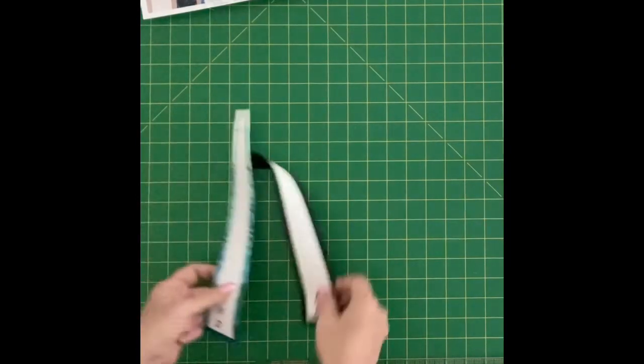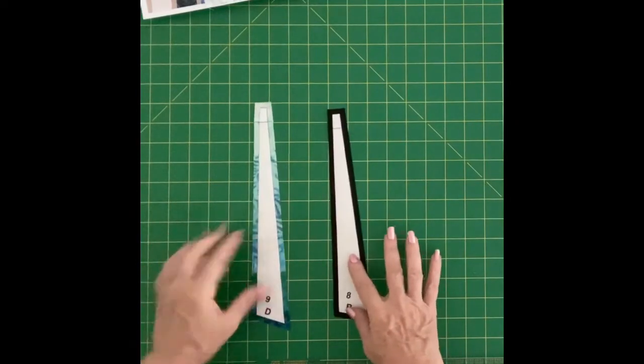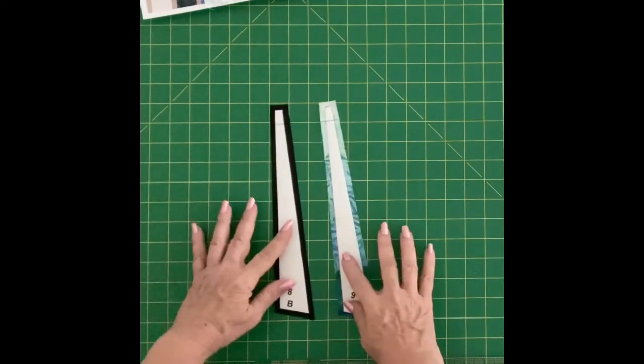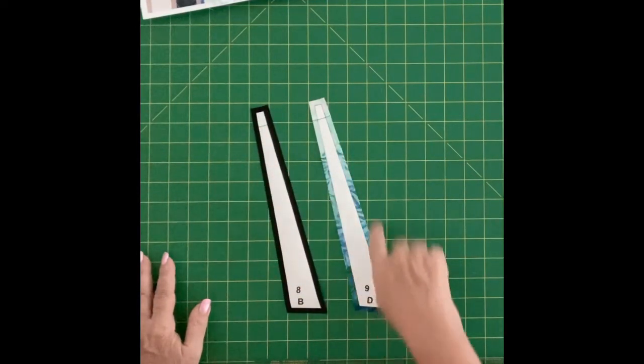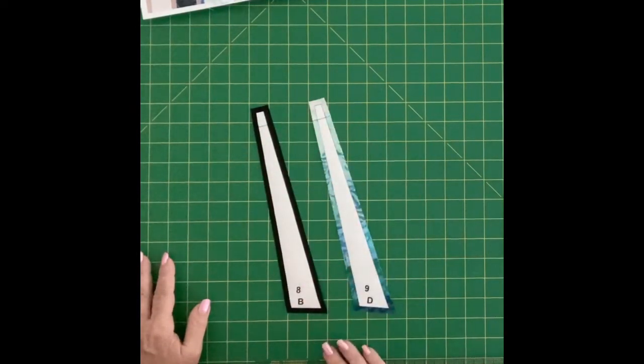So once we have those ironed on, we're going to go ahead and we're going to cut out our seam allowances. So we're going to cut out our perfect quarter-inch seam allowances around all four sides, and then we'll be ready to start sewing this together.